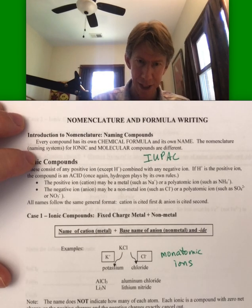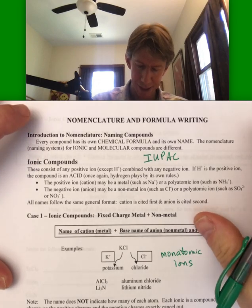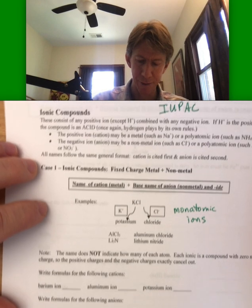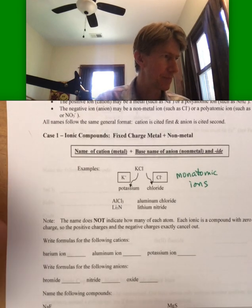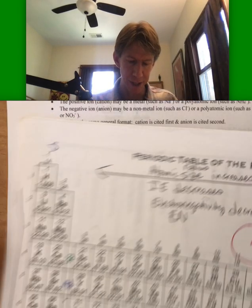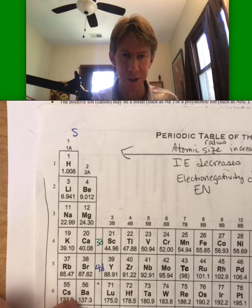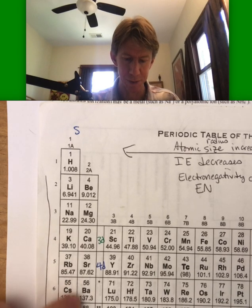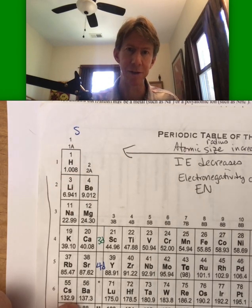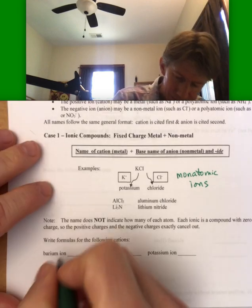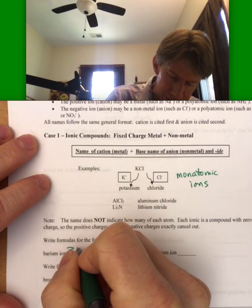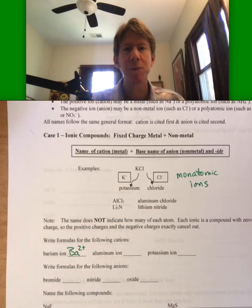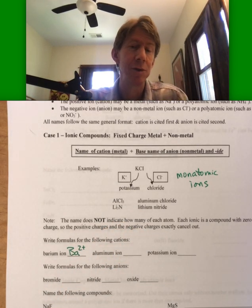So let's write the formulas for the following cations. Barium — I look for barium on my periodic table, and barium is in Group 2, which means it's going to be two plus. So I write the chemical symbol, then two plus. Two plus is more standard, but if you write plus two, that's fine as well.